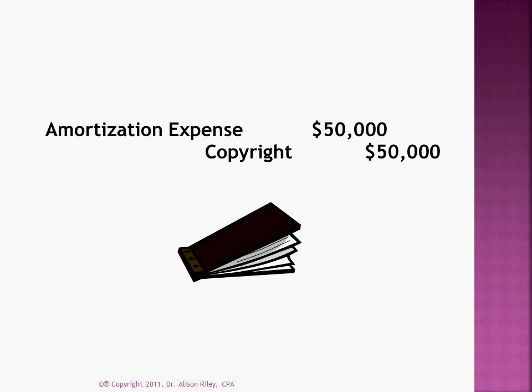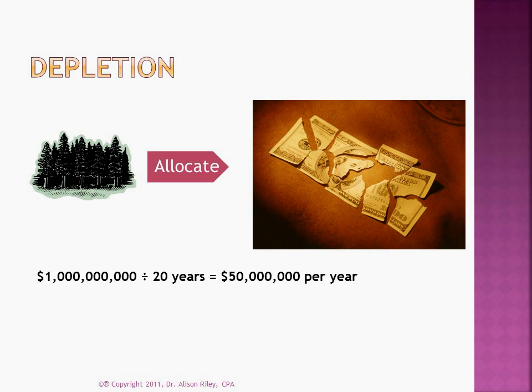Here is the journal entry to record the amortisation example. The process is very similar for expensing the cost of wasting assets such as coal mines, oil fields and timberland. We call this process depletion.